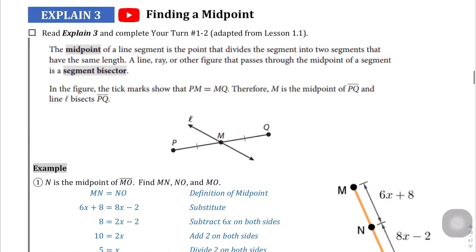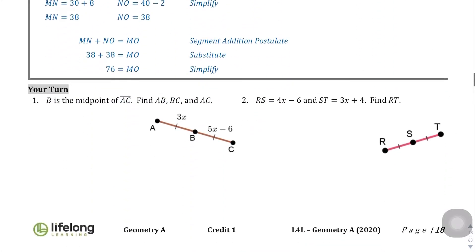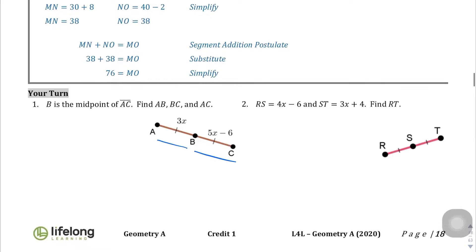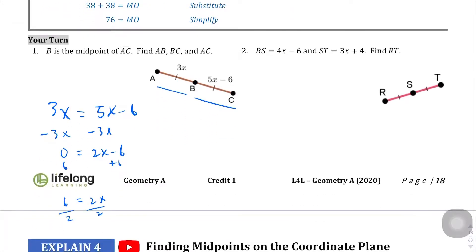Explain 3 is finding a midpoint. These next two problems are easy — midpoint means the two segments are equal. So we write 3X equals 5X minus 6. Subtract 3X from both sides to get 0 equals 2X minus 6. Add 6 to both sides: 6 equals 2X. Divide by 2: X equals 3. That's not the final answer — we plug back in. AB is 3 times 3, which is 9. BC is 5 times 3 minus 6, which is 15 minus 6, also 9. So AC equals 18.